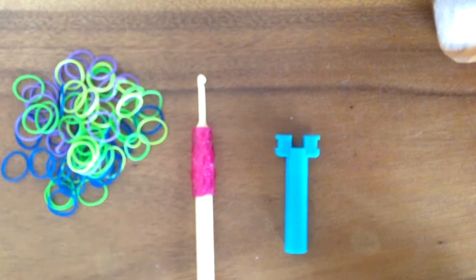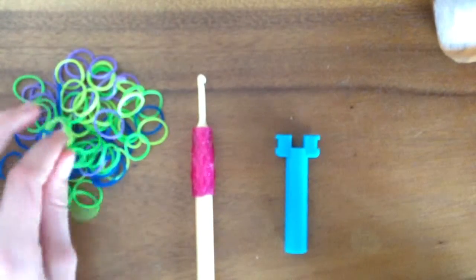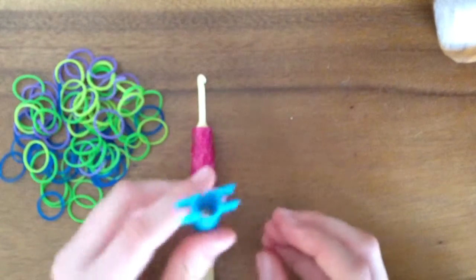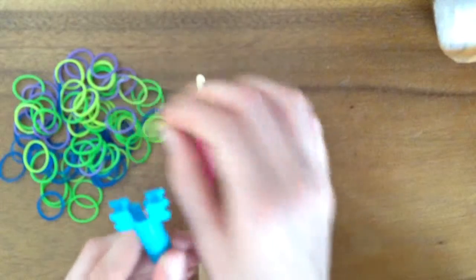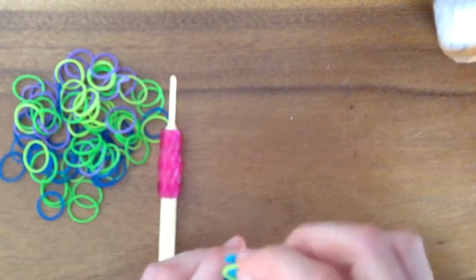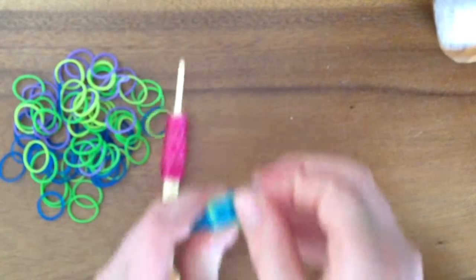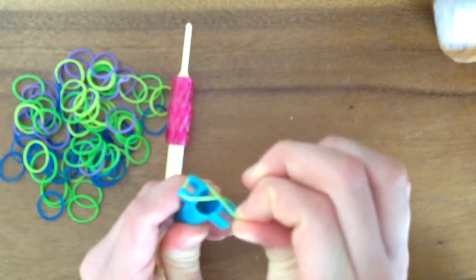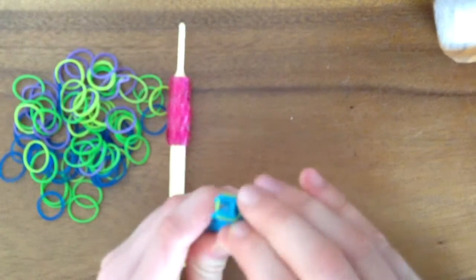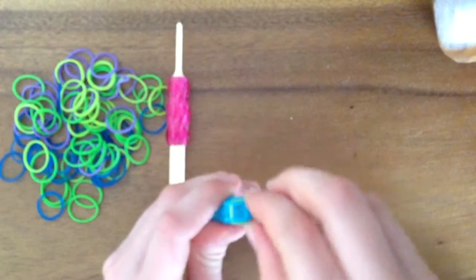So to start off, we are going to hold the mini loom in one hand and take one rubber band. We are going to place it on the mini loom, twist it, and then put it back on.